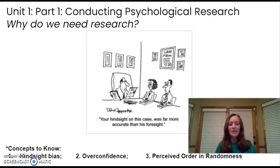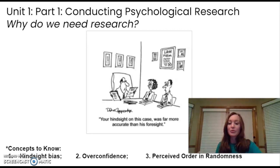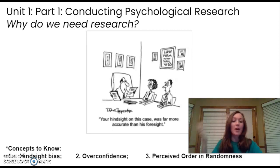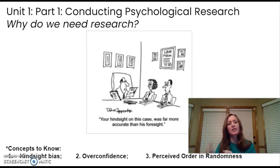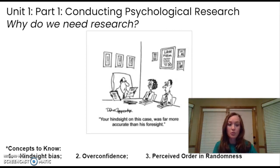The first pitfall is hindsight bias — the idea that 'I knew it all along.' We have a tendency to believe, after learning an outcome, that we could have predicted it. Think about after the Super Bowl: everyone knew that pass shouldn't have been made — but that's after the fact. A good example from the Myers textbook: if you give half a group one psychological finding and the other half an opposite result...